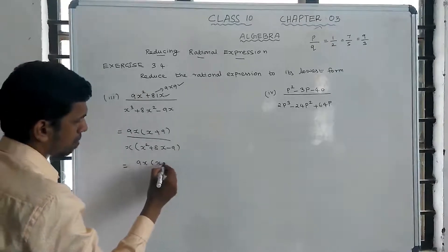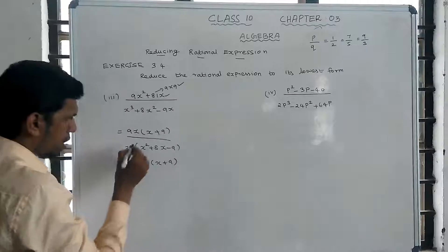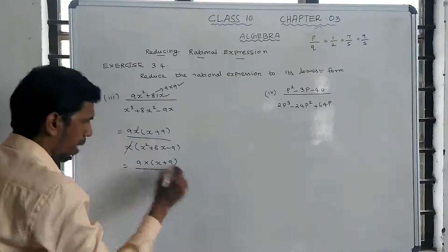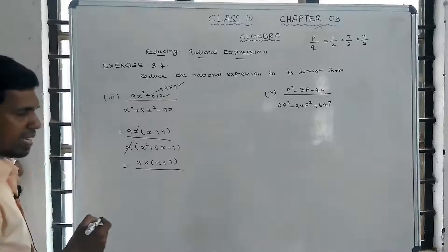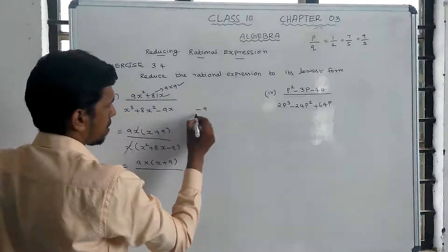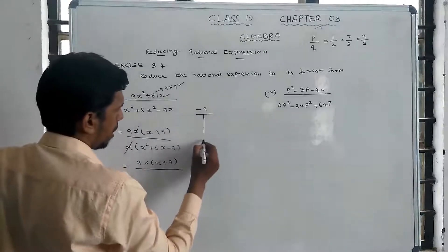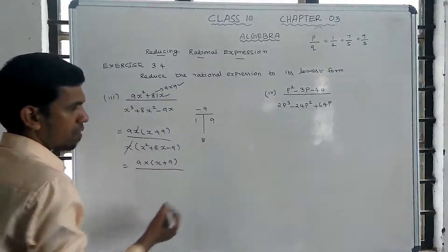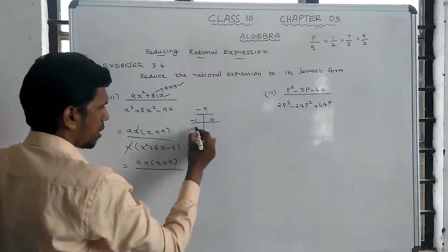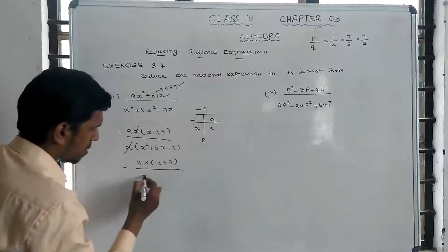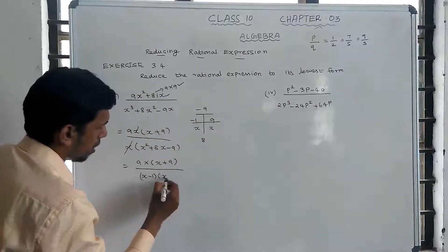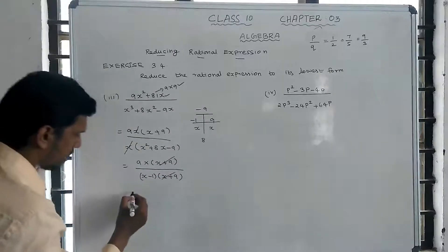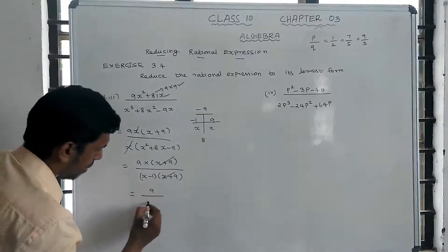The denominator x cubed plus 8x squared minus 9x factors as x times x squared plus 8x minus 9, which is x times x plus 9 times x minus 1. After cancellation, the remaining answer is 9 divided by x minus 1.